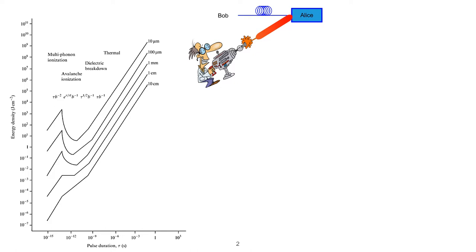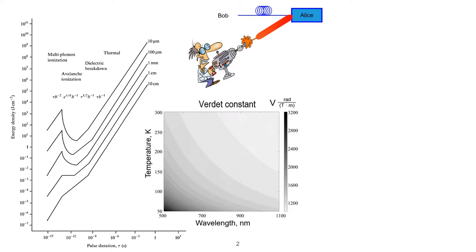In our previous research, we demonstrated an attack using continuous-wave laser. The main parameter that determines the isolation of a component is the Verdet constant.